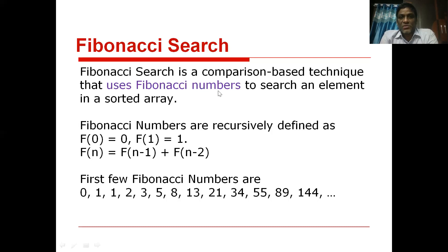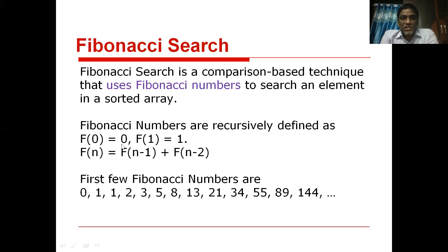Because Fibonacci search depends on Fibonacci numbers, let us understand what Fibonacci numbers are. We define the Fibonacci number sequence recursively: F(0) = 0, which is the first element; F(1) = 1, the second element; and the remaining elements F(n) are calculated as the sum of the previous two elements, that is F(n-1) + F(n-2).